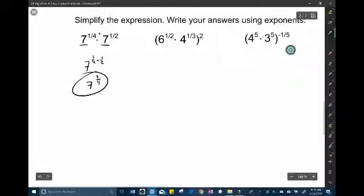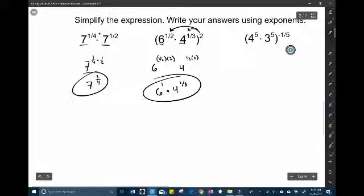6 to the 1 half times 4 to the 1 third. You can distribute the power of 2. You can't combine them because of the different bases. So this is really 6 to the 1 half times 2. And then 4 to the 1 third times 2. So it is 6 to the 1st essentially times 4 to the 2 thirds. And that's your answer.